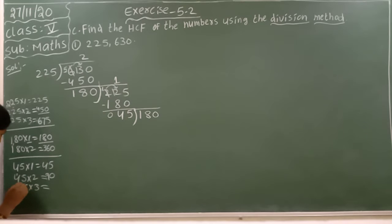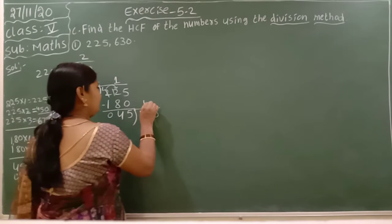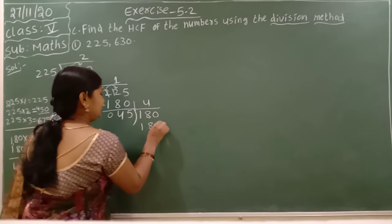45 times 3 is 135 (3 times 5 is 15, 3 times 4 is 12 plus 1 is 13). 45 times 4 is 180 (4 times 5 is 20, 4 times 4 is 16 plus 2 is 18).